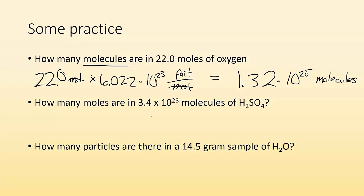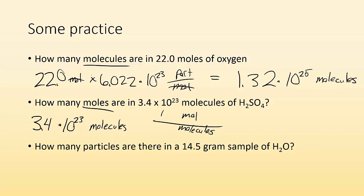How many moles are in 3.4 times 10 to the 23rd molecules of H2SO4? I start with 3.4 times 10 to the 23rd molecules and need to get moles, so I put moles on top and molecules on the bottom. One mole is 6.022 times 10 to the 23rd, so I divide 3.4 times 10 to the 23rd by 6.022 times 10 to the 23rd and get 0.56 moles. Molecules cancel out and the only unit left is moles.